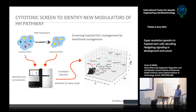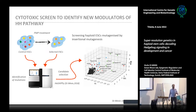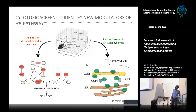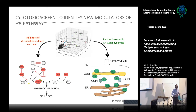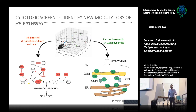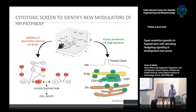We decided to use this phenotype of purmorphamine cytotoxicity to perform a genetic screening to identify novel modulators of the Hedgehog cascade. We took our haploid embryonic stem cells, deeply mutagenized them by insertional mutagenesis, and treated them with purmorphamine. We identified many genes enriched in mutations during selection, falling into two main classes: inhibitors of dissociation-induced cell death (positive controls of our pipeline), and factors encoding proteins with ER-Golgi localization. Considering that very little is known about Smoothened trafficking in the ER-Golgi compartment, we focused on the top hit: TMED2.